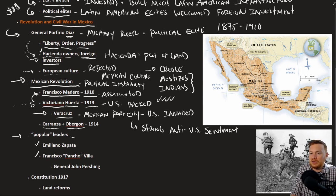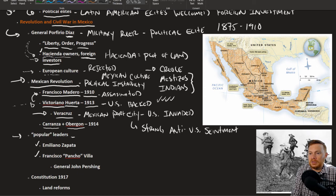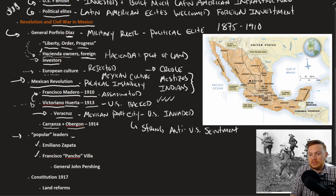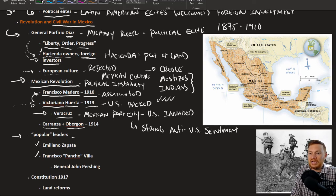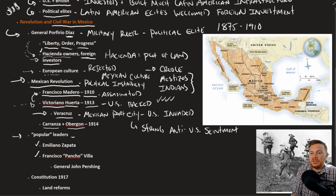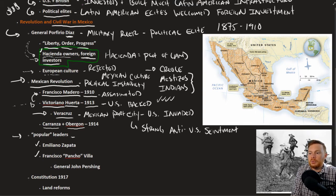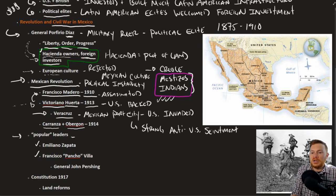Carranza and Obregon were still vying for the support of the political and economic elite. The popular leaders were those mainly speaking on behalf of the Mestizos, the Indians, and the landless populations. Emilio Zapata and Francisco Pancho Villa led revolts specifically against hacienda owners — much more of a populist slant — leading local revolts.